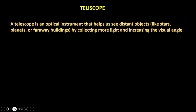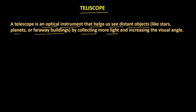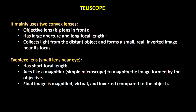With this information, let's understand the working of a telescope. A telescope is an optical instrument that helps us to see distant objects like stars, planets, and faraway buildings by collecting more light and increasing the visual angle. A telescope contains two convex lenses.